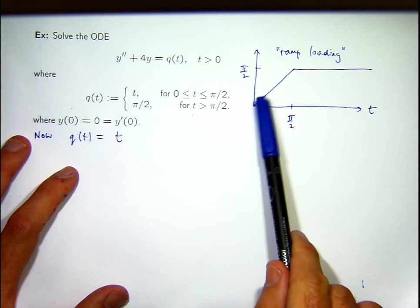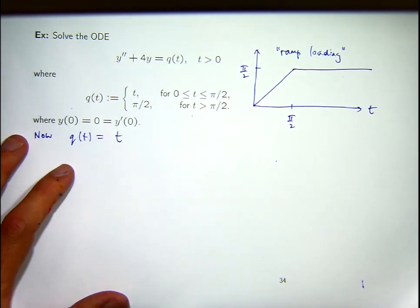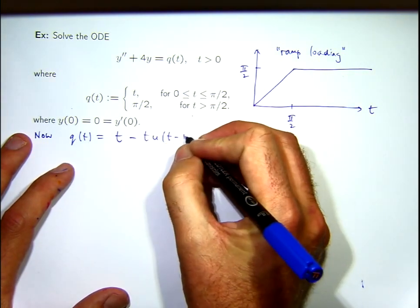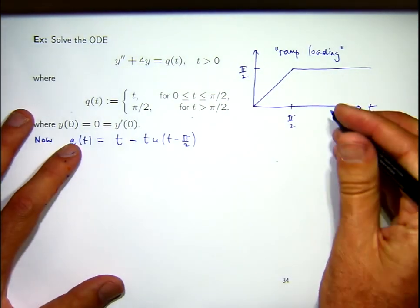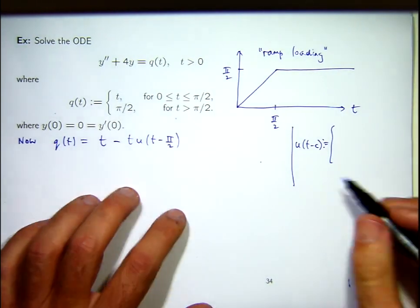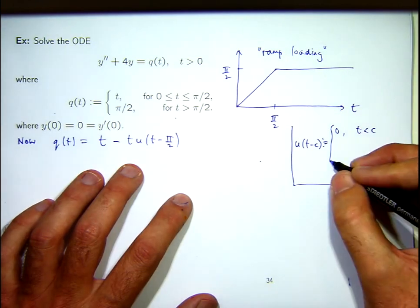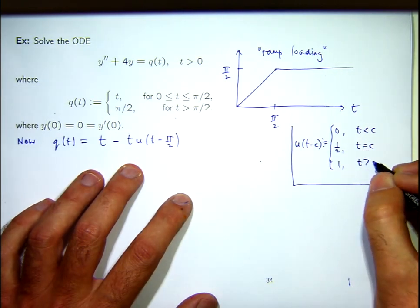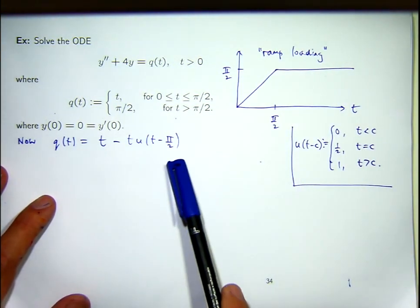I start off with T, and then that T gets turned off and the constant function gets turned on. Using the Heaviside step function, I'm going to form the appropriate expression. The Heaviside step function is 0 for T less than point C, one-half at point C, and positive 1 to the right of C. In this context, C would be pi on 2.